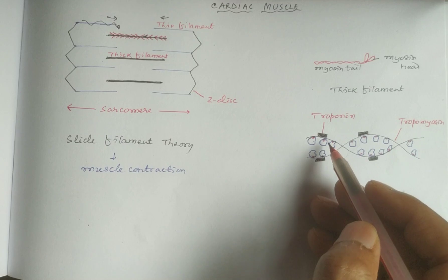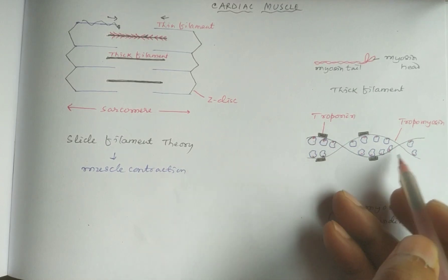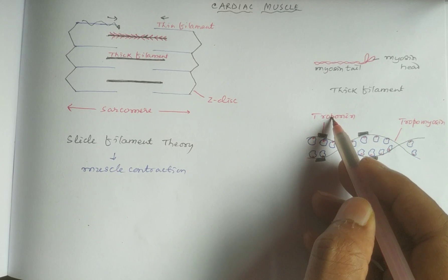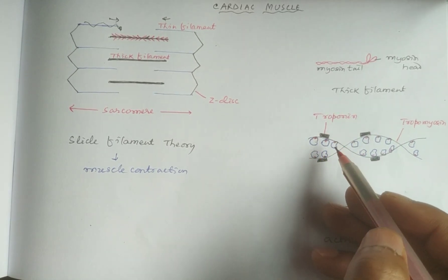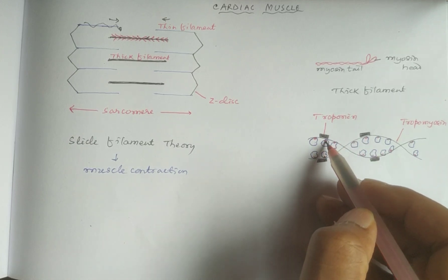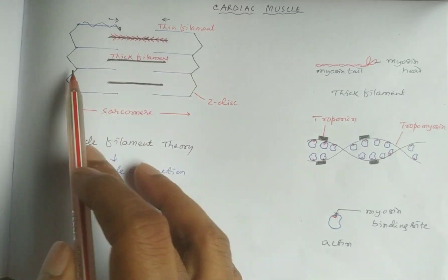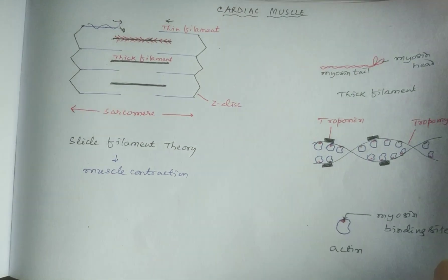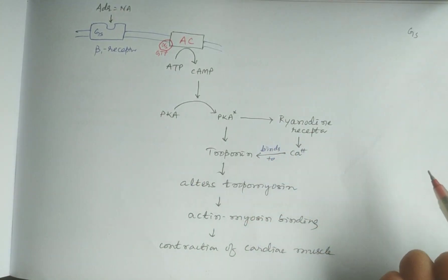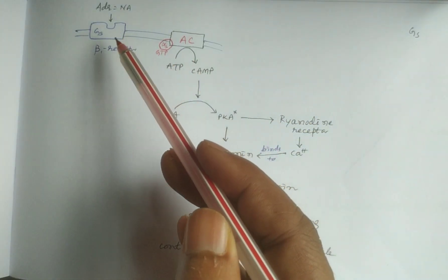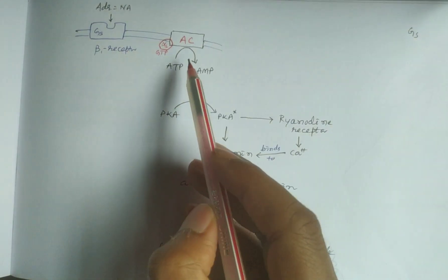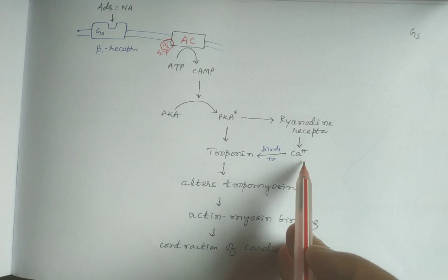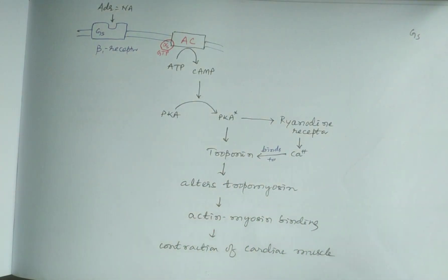The myosin-binding sites of actin are covered by tropomyosin, which is regulated by the protein troponin. When calcium binds with troponin, tropomyosin is displaced, exposing the binding sites so that actin-myosin binding occurs and the cardiac muscle contracts. This is illustrated with the beta-1 receptor example: adenylate cyclase is activated, cyclic AMP is formed, protein kinase A is activated, calcium is released, calcium binds troponin, displaces tropomyosin, actin-myosin binding occurs, and cardiac muscle contracts.